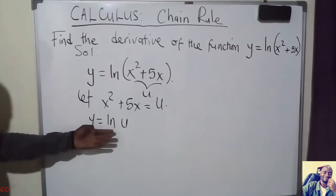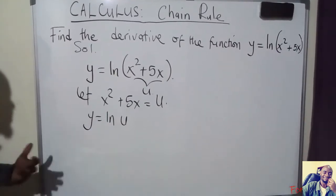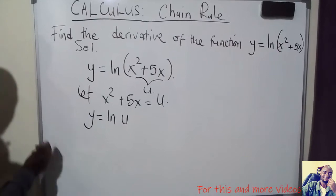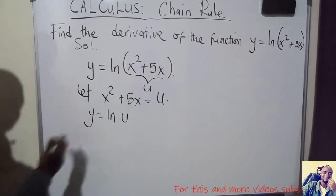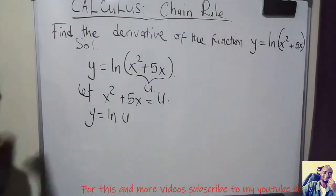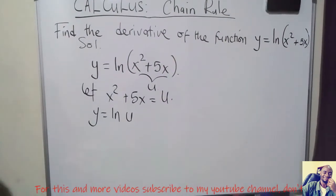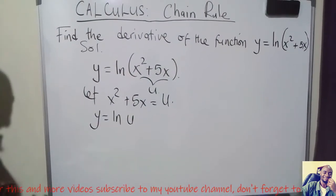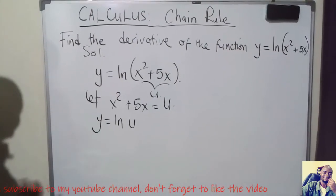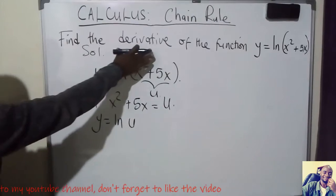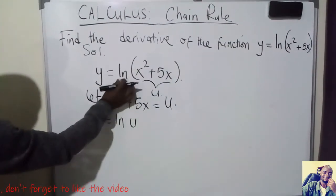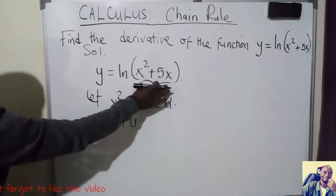Once you let this be u, you are going to write the Chain Rule. The Chain Rule gives us the gradient function — because when they tell you to find the derivative, they are telling you to differentiate or find the gradient function. We are going to use the Chain Rule because we have a function inside another function.